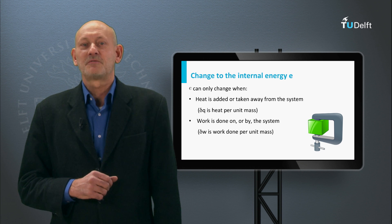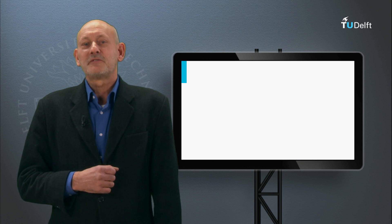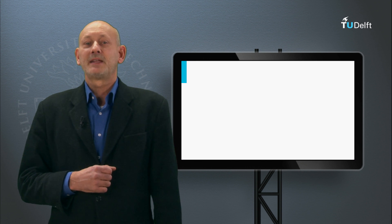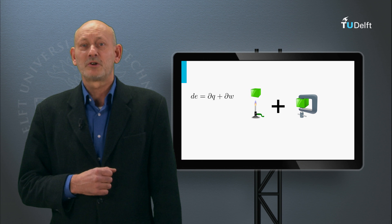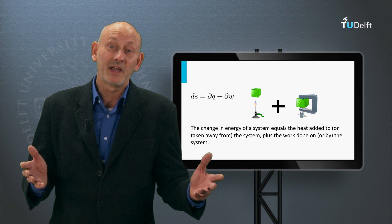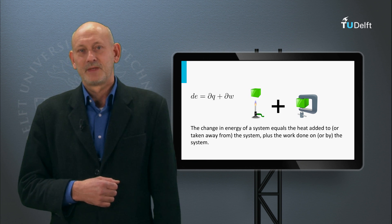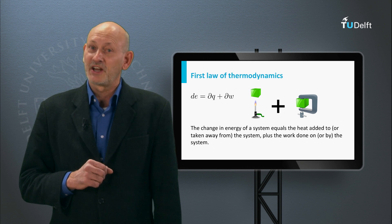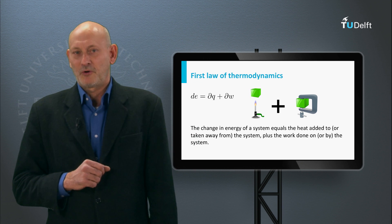For instance, when the boundary of the system is pushed in, work is done on the system. So, if dE is the change in internal energy of the system per unit mass, we can write dE = delta Q + delta W. In words: the change in internal energy of a system equals the heat added to or taken away from the system plus the work done on or by the system. This is a fundamental equation that constitutes the first law of thermodynamics.